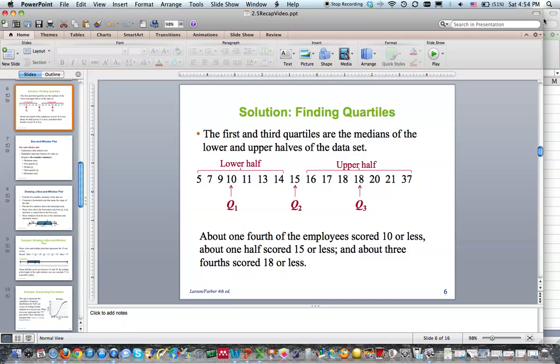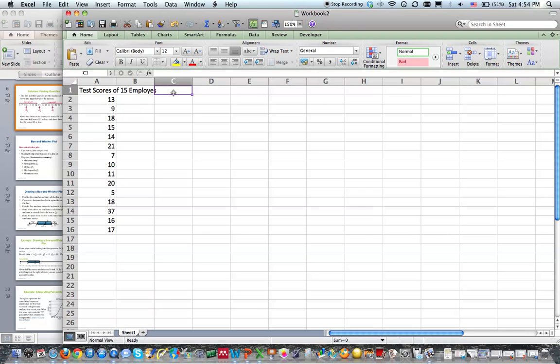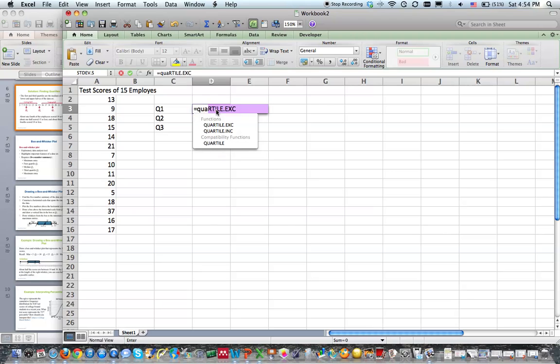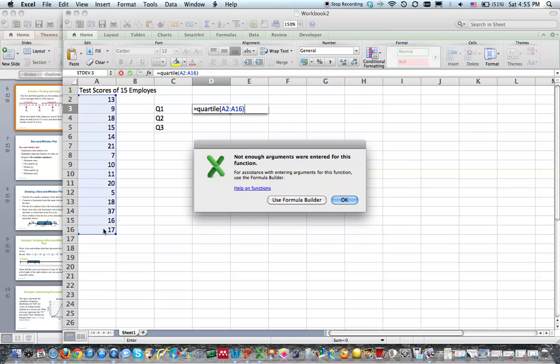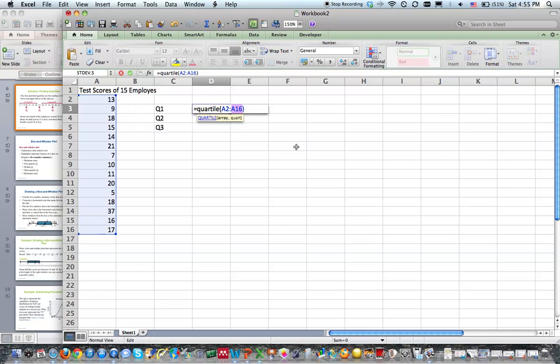So I've already put the data into Excel. I'm going to type in Q1, Q2, and Q3. Over here, I'm going to hit equals, type in quartile, Q-U-A-R-T-I-L-E, and then put in my parenthesis. Then I'm going to insert my data by highlighting my data from A2 to A16. Now there's one thing I forgot to do, is to tell Excel which quartile we are talking about. So I'm going to put a comma and a 1, and that tells Excel to find the first quartile. And in our case, it's 10.5.